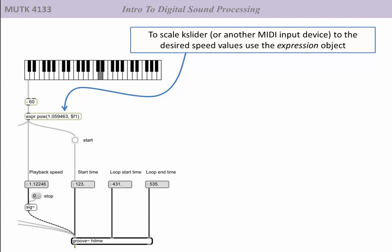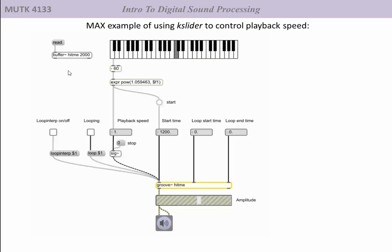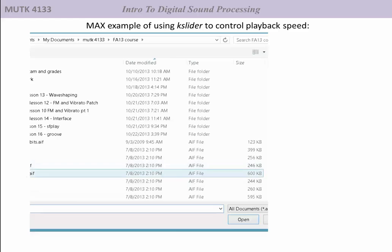Finally, using the speed value, we can use groove~ to produce equally tempered pitches. This is the same method we used with sfplay~. To scale the MIDI notes of the key slider or any other MIDI input device, such as a sequencer or a keyboard controller, we use the expression object. And we use the value 1.059643 as a good approximation for the 12th root of 2. Here's an example of using the key slider with the expression to scale equally tempered pitches.